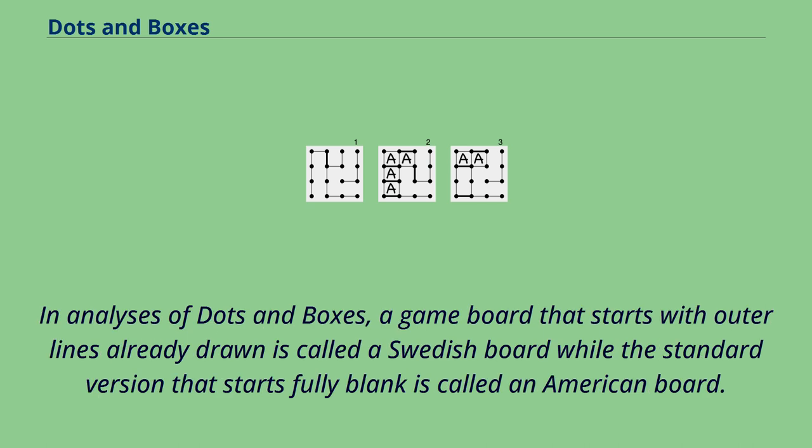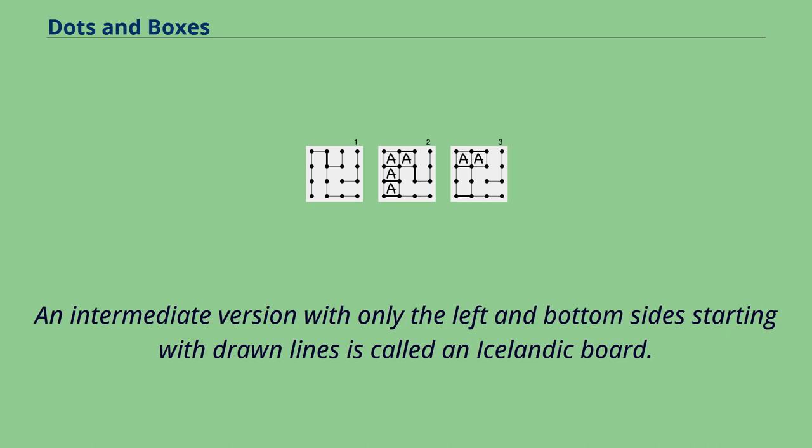In analyses of dots and boxes, a game board that starts with outer lines already drawn is called a Swedish board while the standard version that starts fully blank is called an American board. An intermediate version with only the left and bottom sides starting with drawn lines is called an Icelandic board.